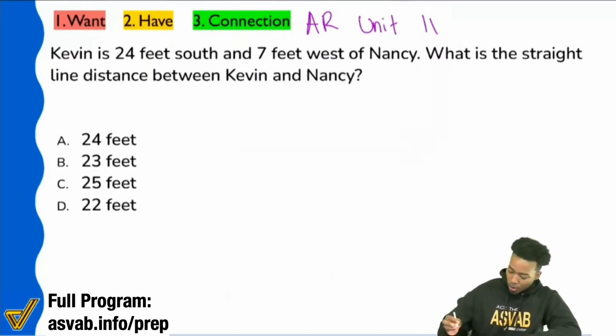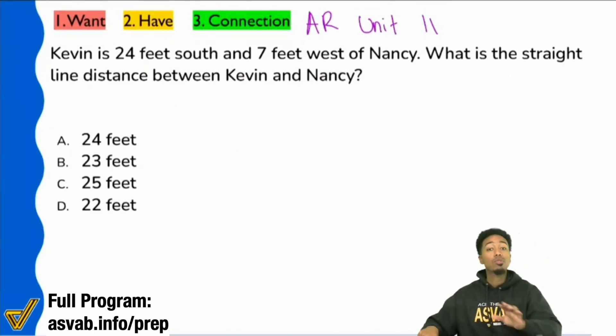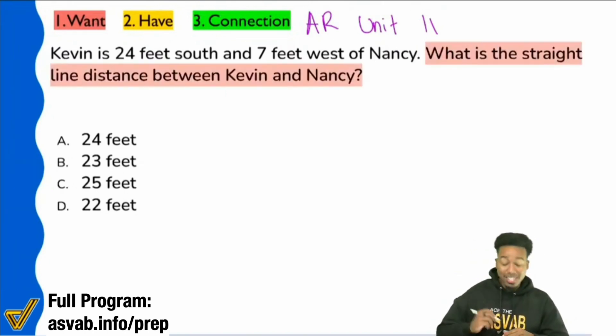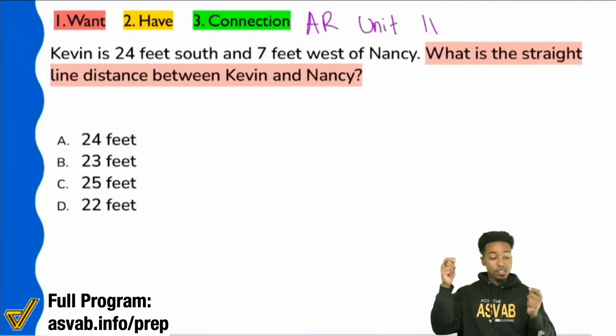Let me show you what's going on here. What we're looking for is what is the straight line distance between Kevin and Nancy? Before I even begin, from that one sentence alone, what is the straight line distance between Kevin and Nancy? Is it fair to say that if Kevin's here and Nancy's here, we're just looking for the straight line distance between them?